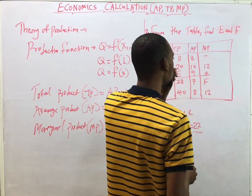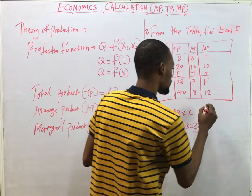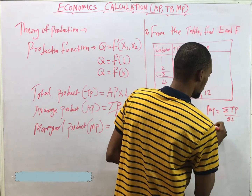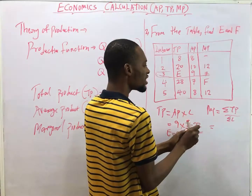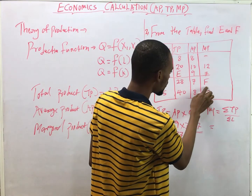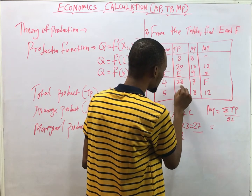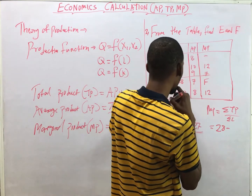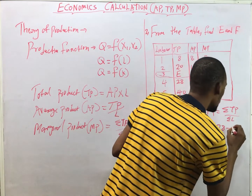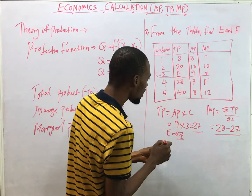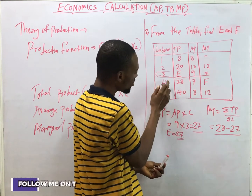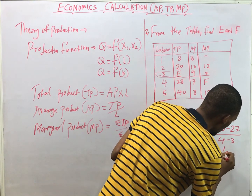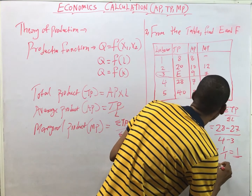Next up is Marginal Product at f. Marginal Product equals change in Total Product over change in Labor. We are solving for f, so it's TP at labor 4 minus TP at labor 3, over labor 4 minus labor 3. That's 28 minus e (which is 27), all over 4 minus 3. So that's 1 over 1, which equals 1. Therefore f equals 1.